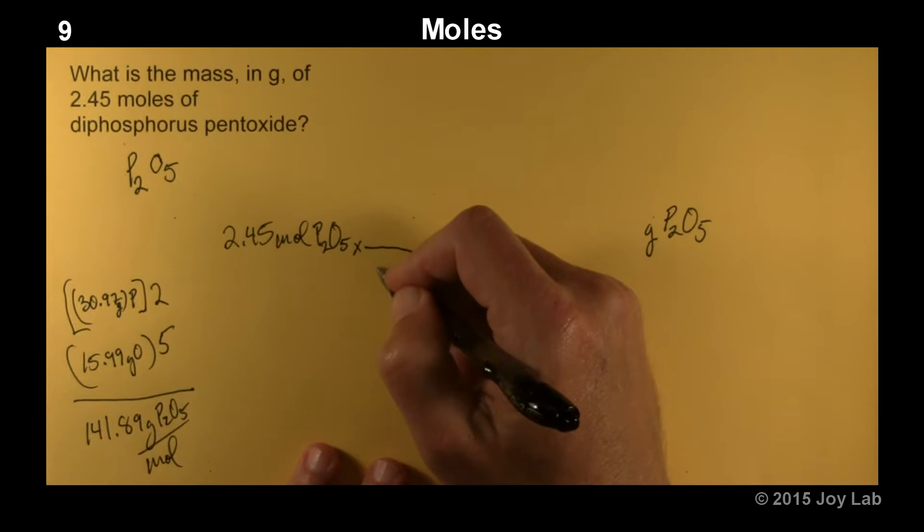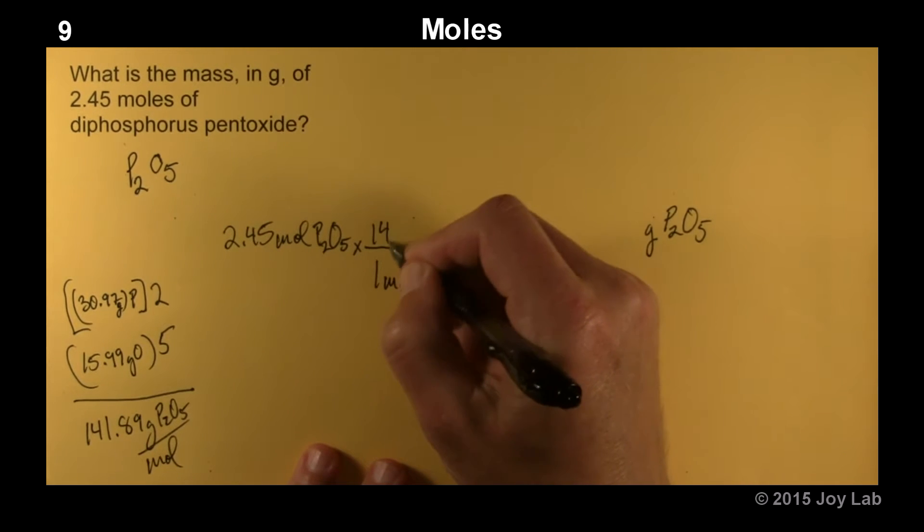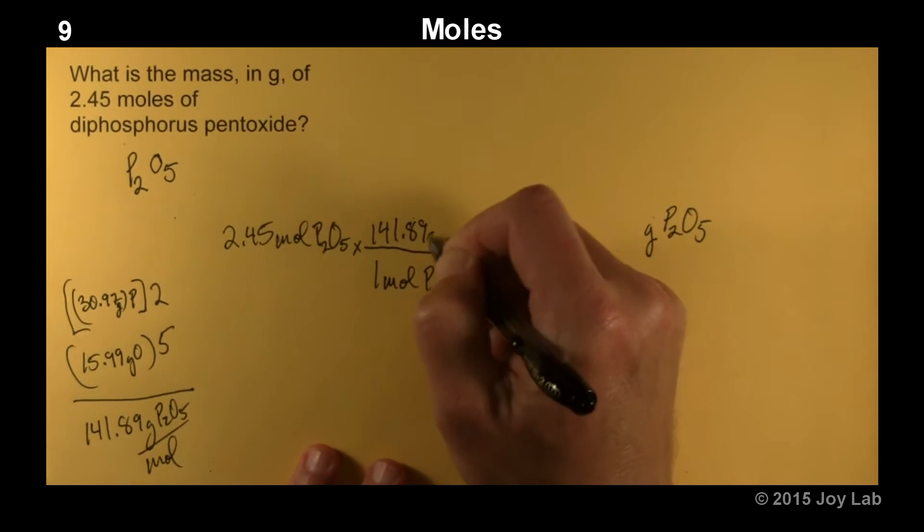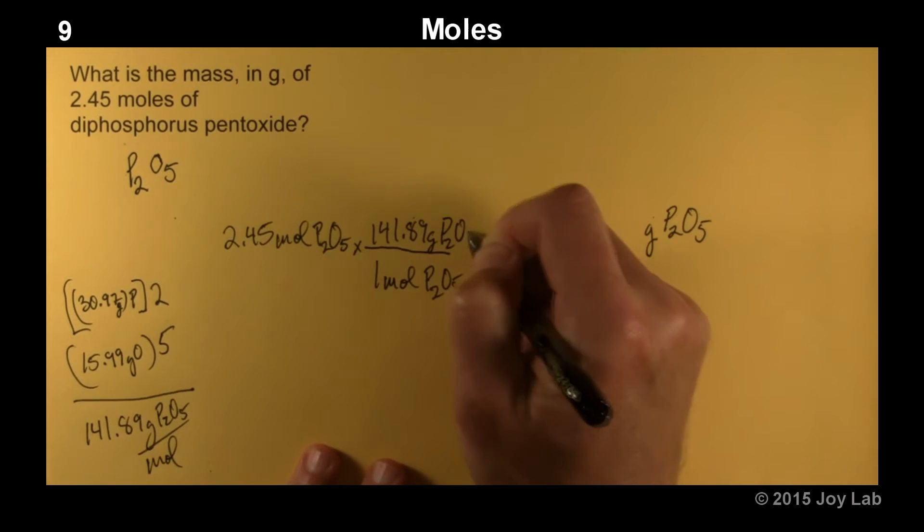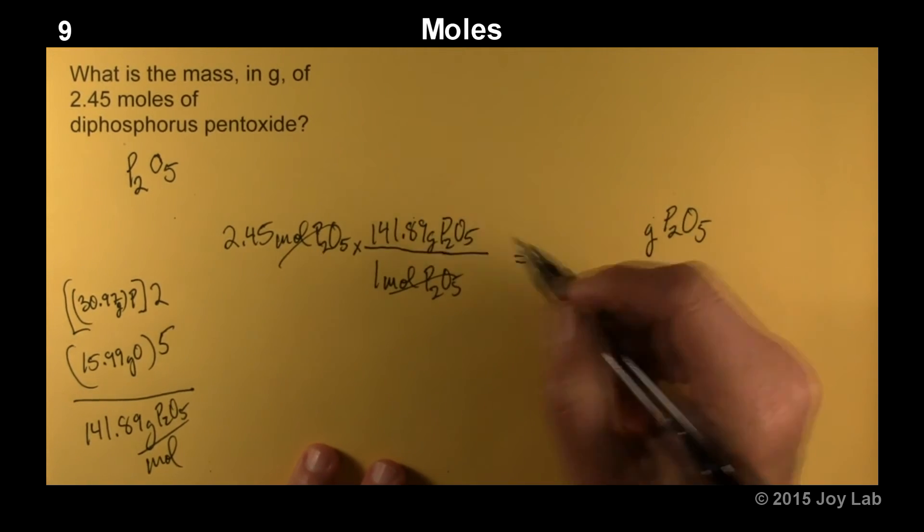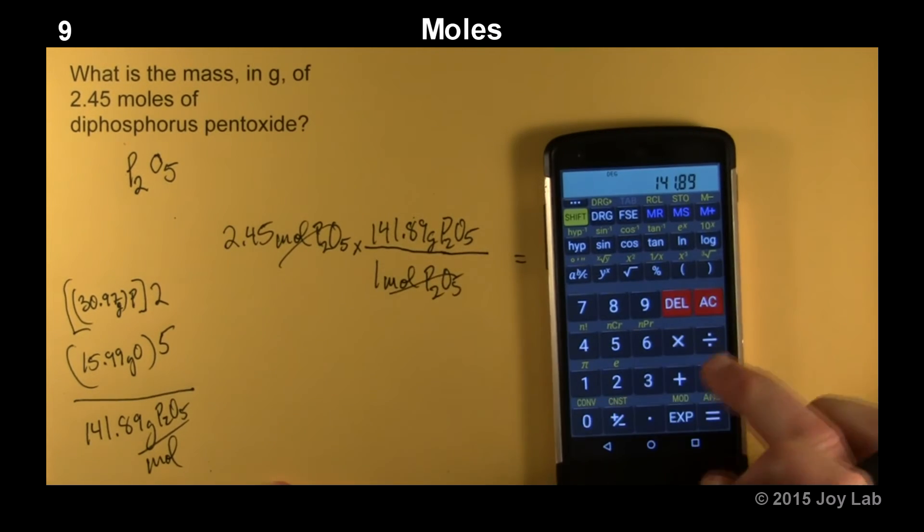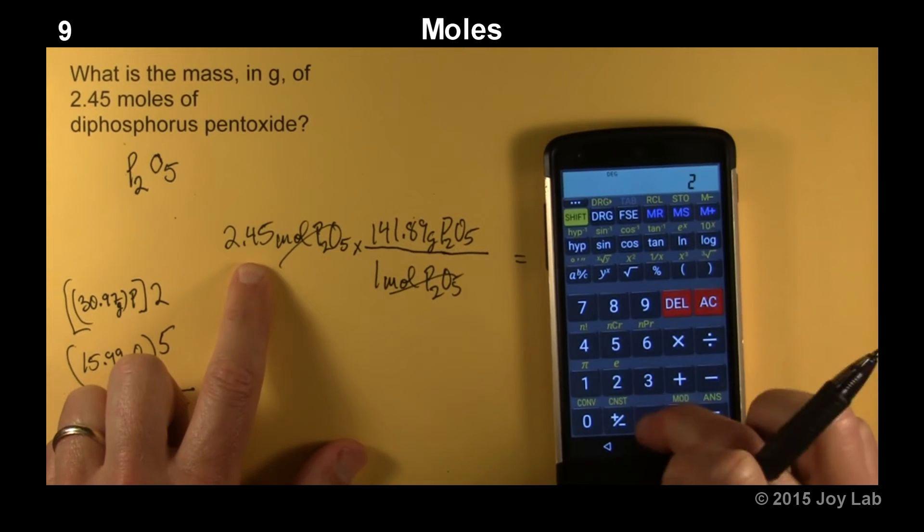So I know that for every 1 mole of P2O5, we have 141.89 grams of P2O5. Moles cancel. I'm going to need my calculator. So we have 141.89 times 2.45.